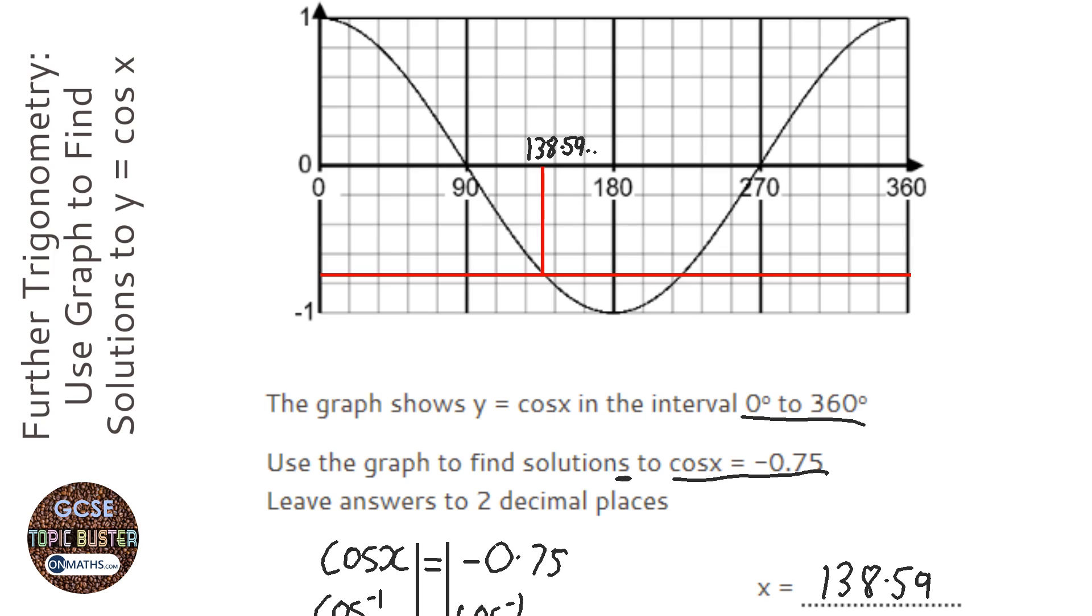And we need to find out what the other point is, and the other point is the other point at which our line we've drawn across crosses the curve, so it's this point here.